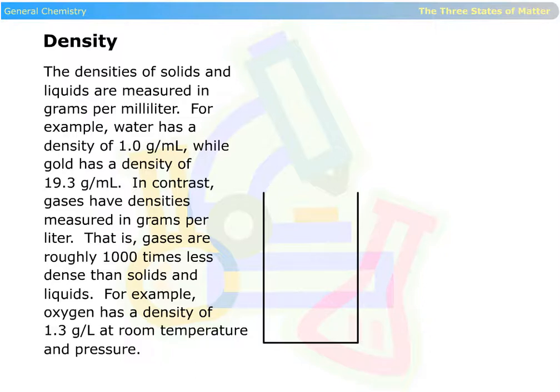Density. The densities of solids and liquids are measured in grams per milliliter. For example, water has a density of 1.0 grams per milliliter, while gold has a density of 19.3 grams per milliliter. In contrast, gases have densities measured in grams per liter. That is, gases are roughly 1,000 times less dense than solids and liquids. For example, oxygen has a density of 1.3 grams per liter at room temperature and pressure.